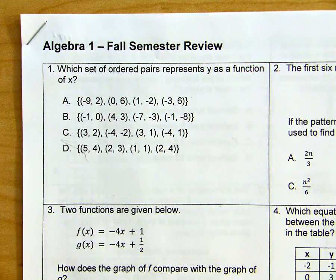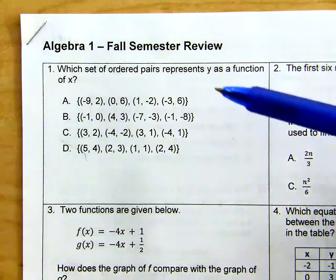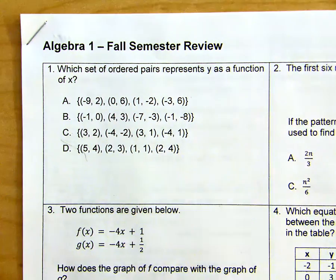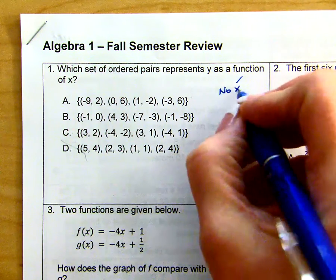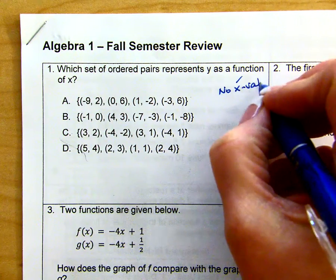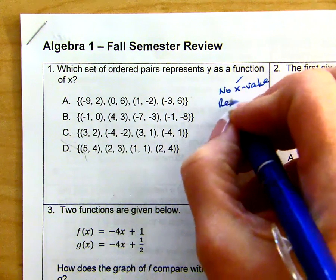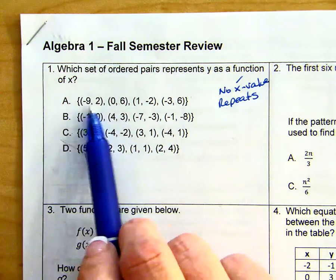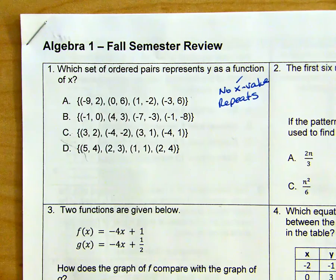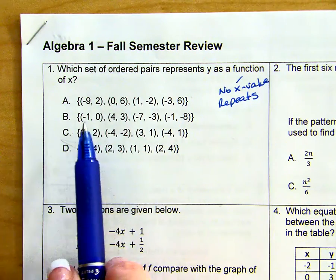For the first problem, they want us to figure out which set of ordered pairs represents y as a function of x. Remember, a function means that no x value repeats. So that is what we're going to do, is check our x values. And no x values repeat in answer choice A.